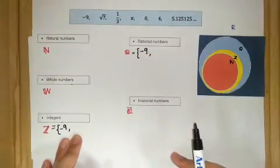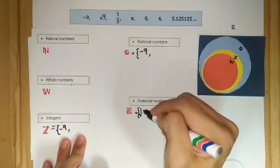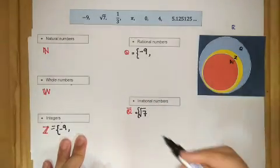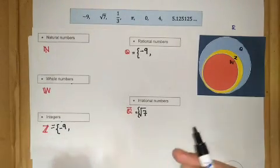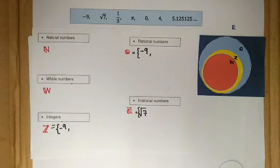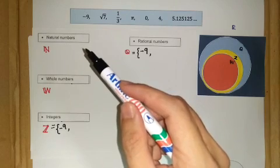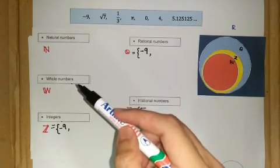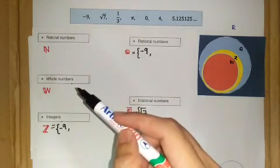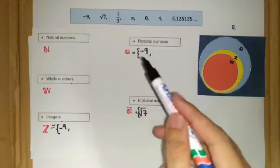What about the next one — √7? √7 is irrational numbers because √7 cannot be expressed as a fraction of two integers, and it is neither a terminating nor a recurring decimal. And what about one third? One third is not a natural number because one over three is not used for counting, and it does not belong to whole numbers or integers either. One third is an example of a rational number.